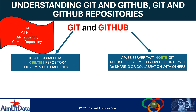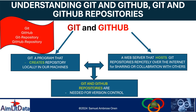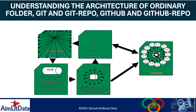We have also seen the similarities between Git and GitHub repositories — we need both of them for controlling the version of our work as we do our projects. We need the Git program to allow us to create repositories, and we need GitHub so that we can share our projects and source code with others over the internet.